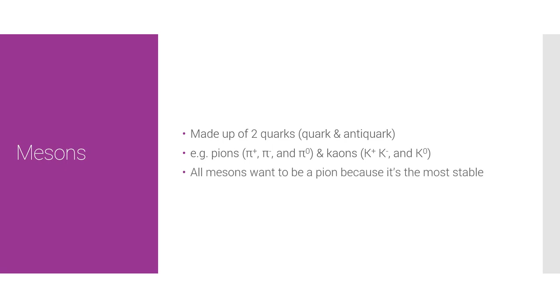All mesons want to be a pion because that's the most stable — it's literally the same concept as the baryons and the proton. Kaons are just heavier pions and more unstable, so essentially the kaon is fat and wants to be a pion as a result.